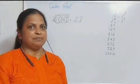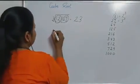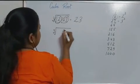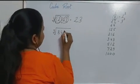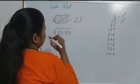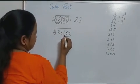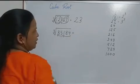Let's take another example where we have to find the cube root of 85,184. First step: make a group of 3 digits from right to left.